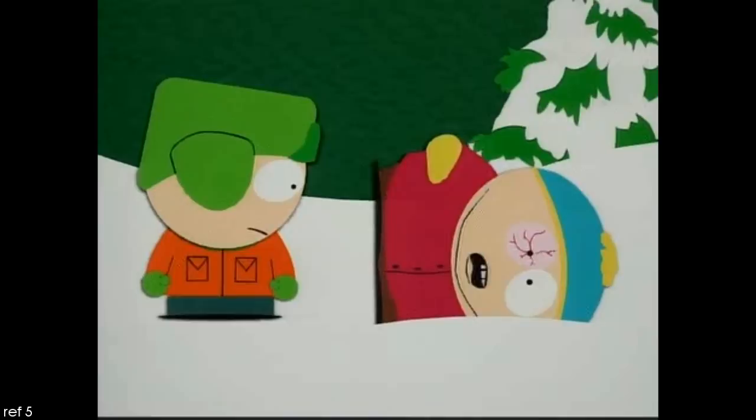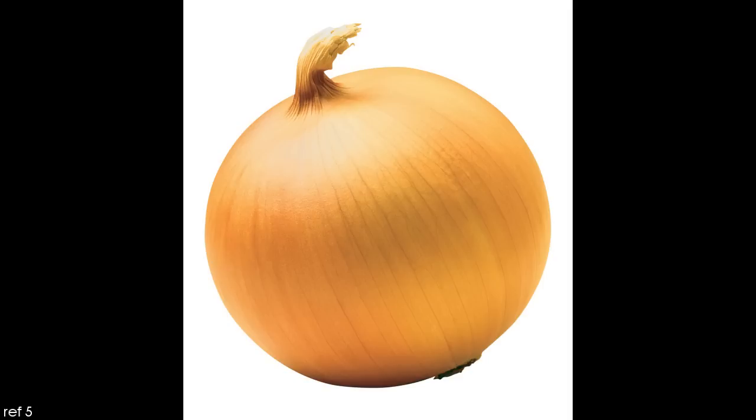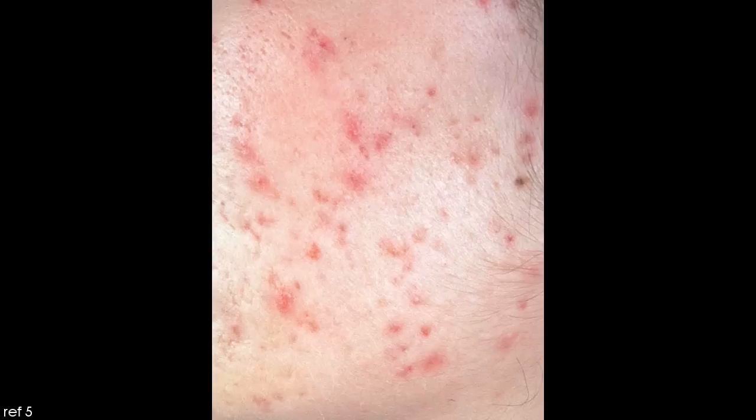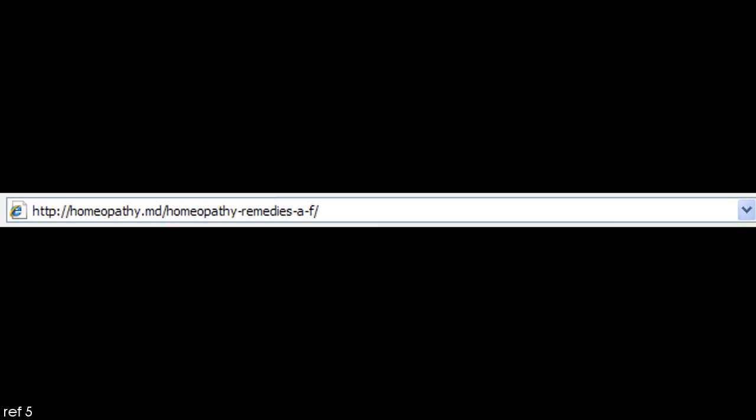For example, according to homeopathy.md, if you had itchy eyes, the remedy might be dilute onion. For diarrhea or food poisoning, a homeopathic treatment could be dilute arsenic trioxide, presumably because arsenic trioxide causes vomiting and diarrhea before it kills you. If you had acne, a homeopathic treatment that is sometimes recommended is dilute anthrax.